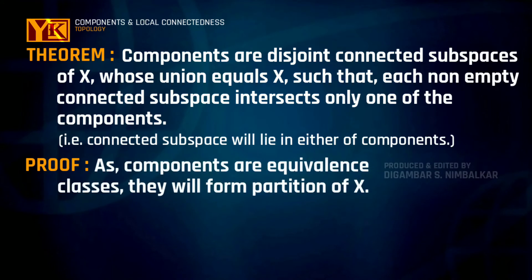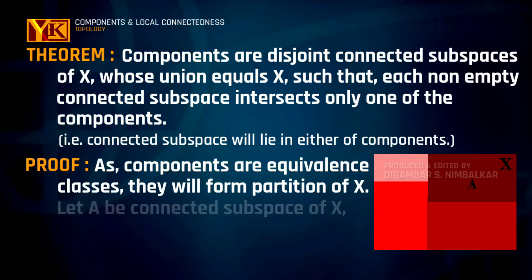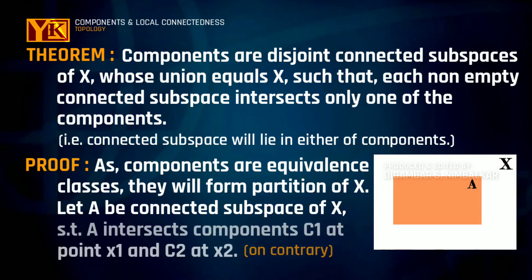As the components are equivalence classes, so they will form the partition of x and thus all the components are disjoint and the union will be equal to x. So, let us consider A to be connected subspace of x such that it intersects the components c1 at some point x1 and c2 at point x2.